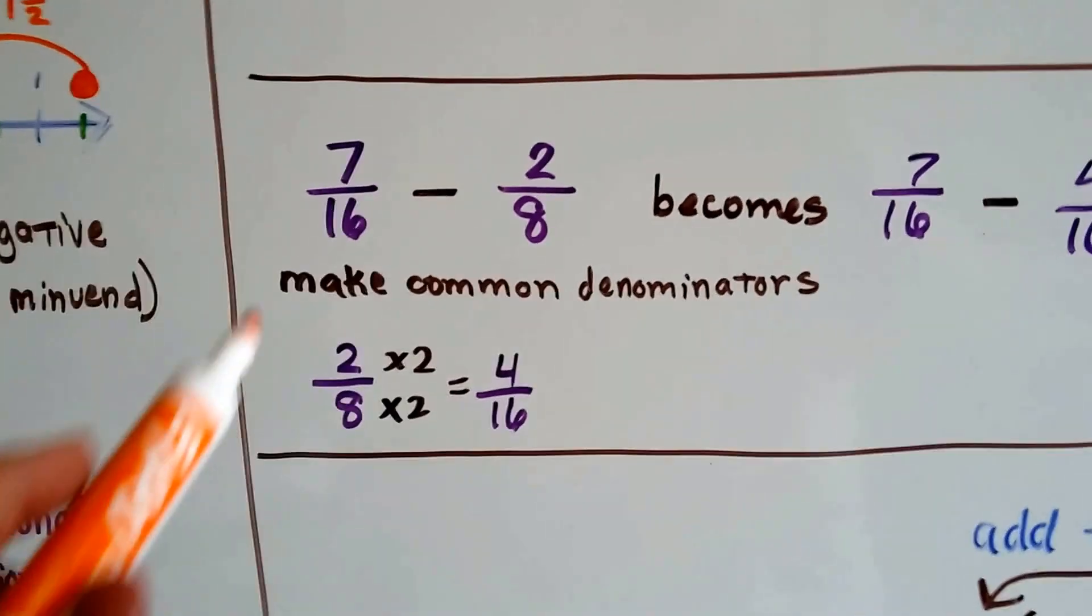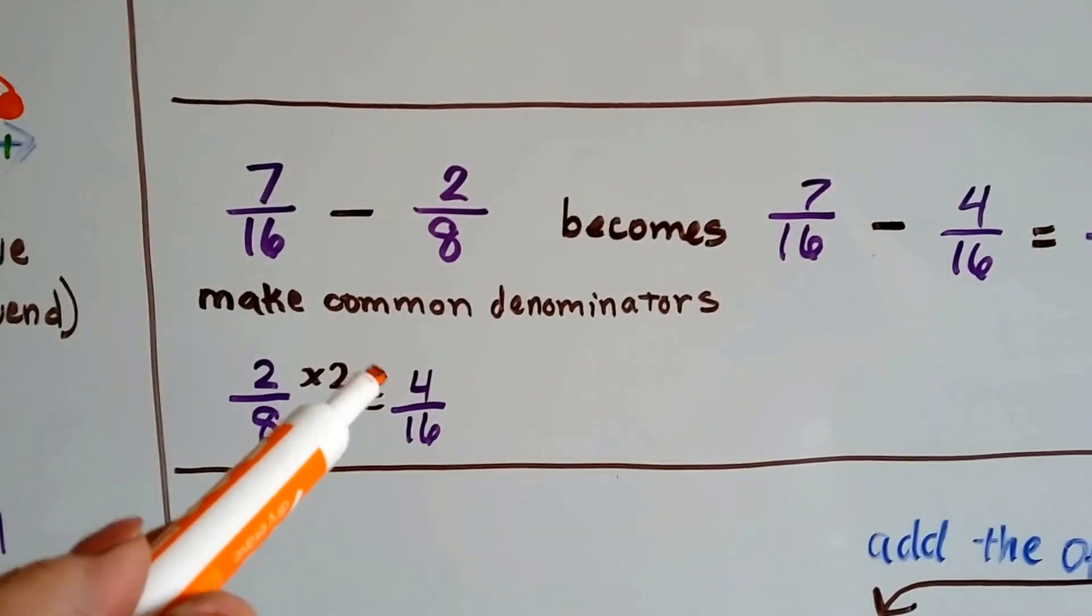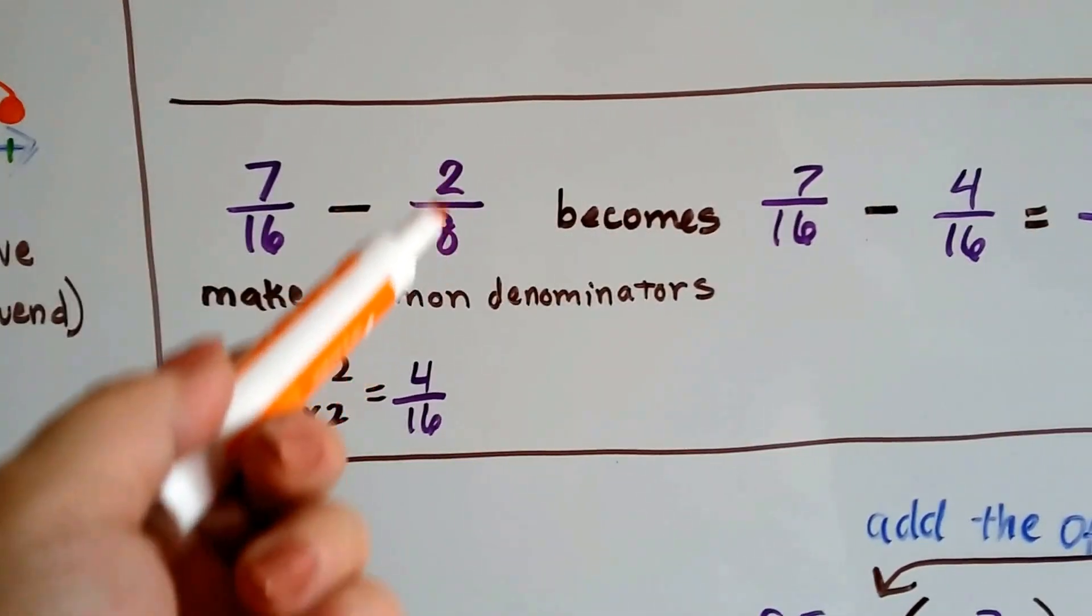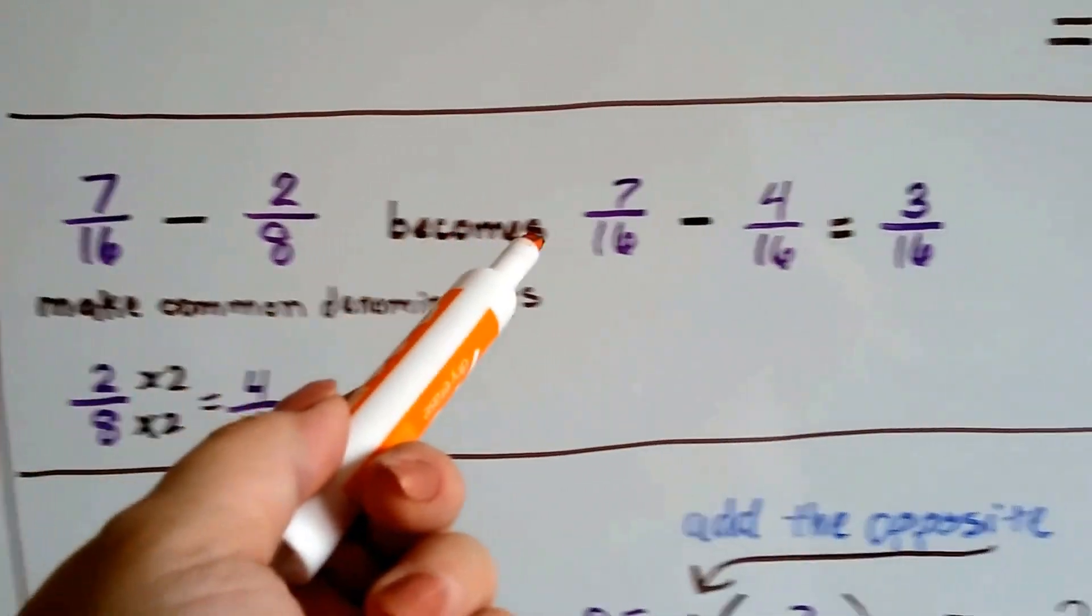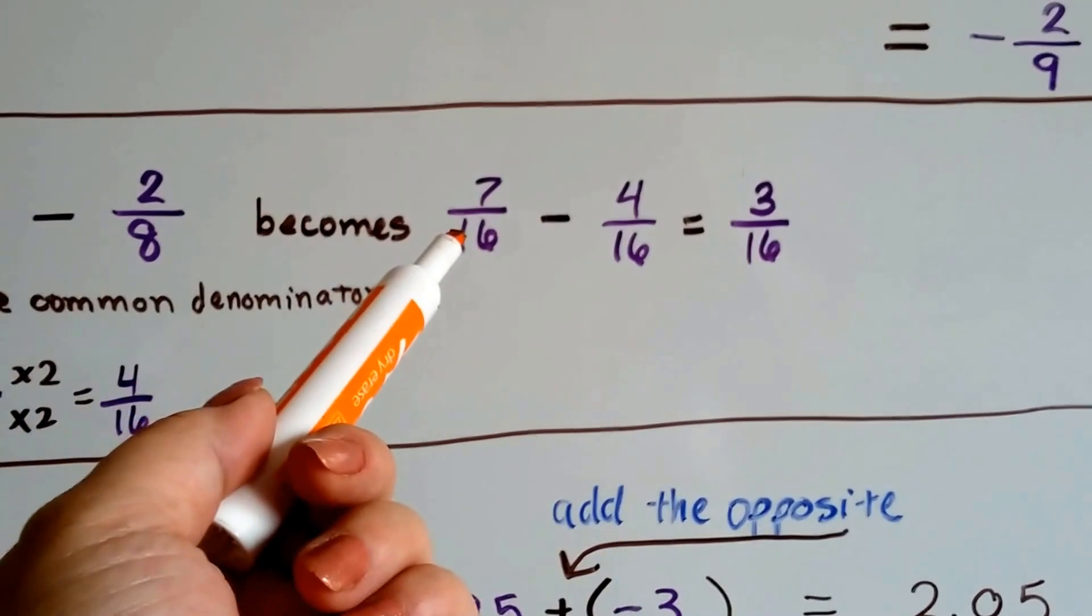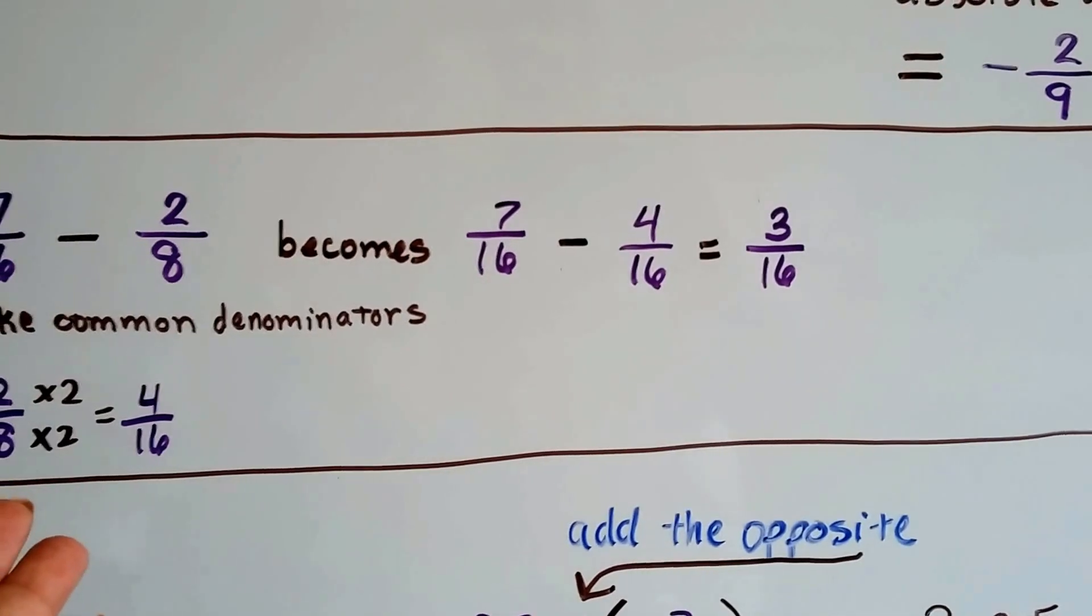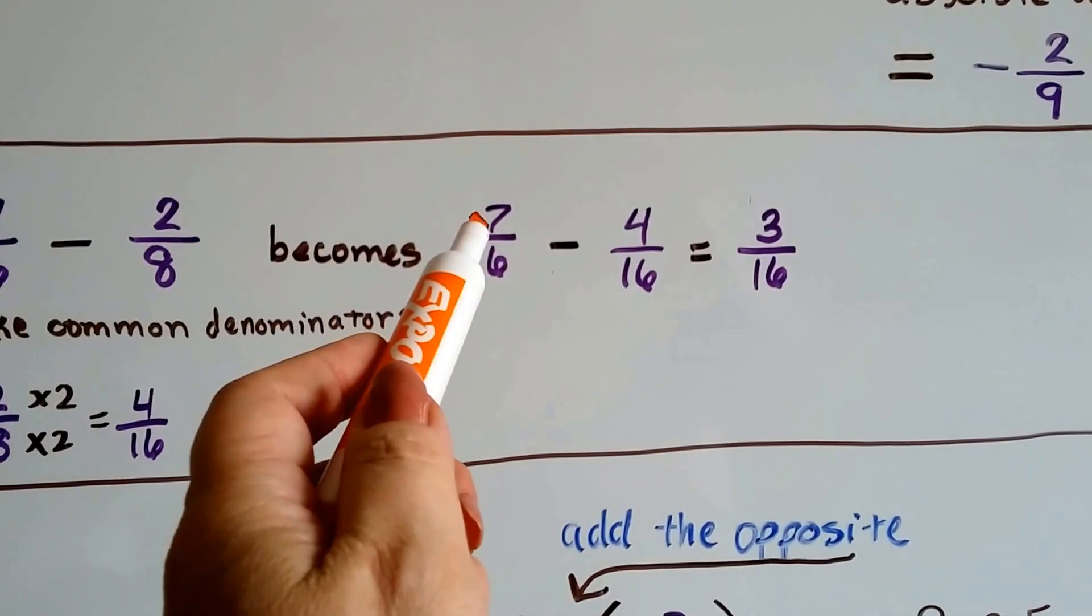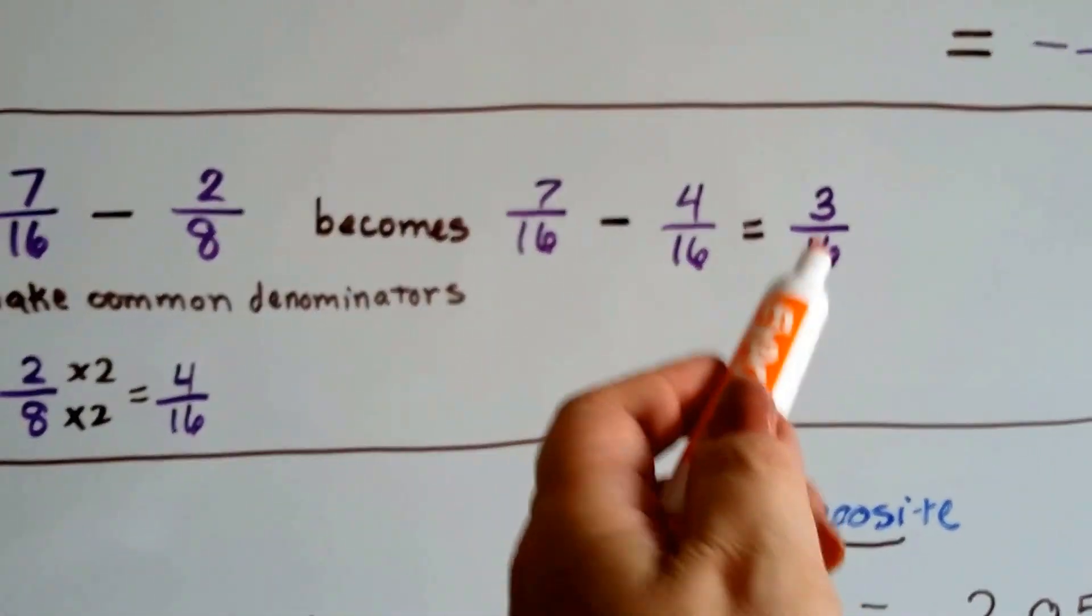Let's try this one. Now we have 7 sixteenths minus 2 eighths. Well, making common denominators, they can both meet at 16ths, right? So we just multiply the numerator and denominator by 2 and get 4 sixteenths. Now we can subtract them. This is just a regular fifth grade fraction problem, isn't it? Even though we're subtracting, we don't need to add the opposite because this is straightforward. This is bigger. It's not going to go into the negatives because the 7 sixteenths is bigger than 4 sixteenths. It's 3 sixteenths.